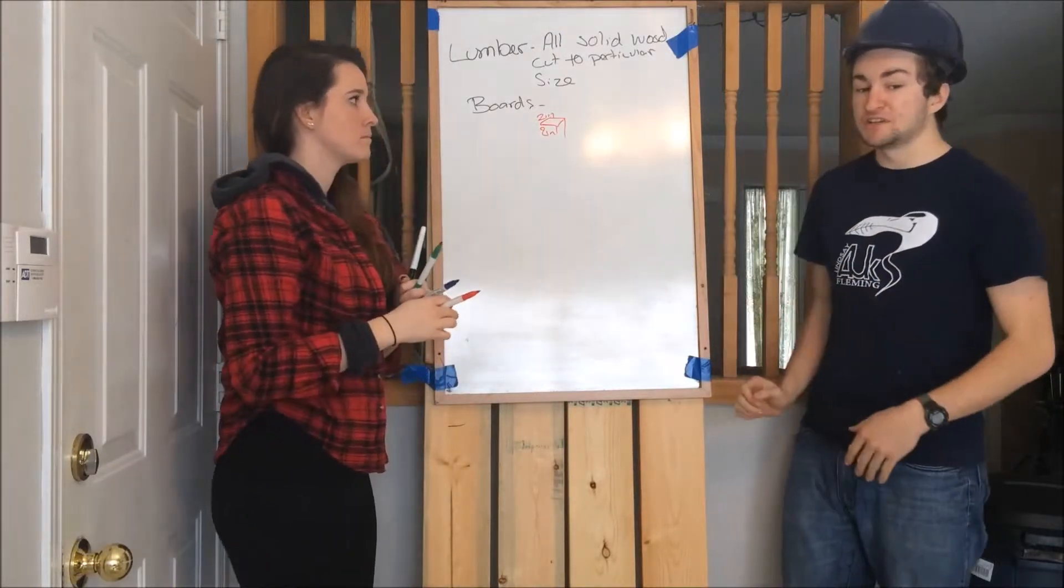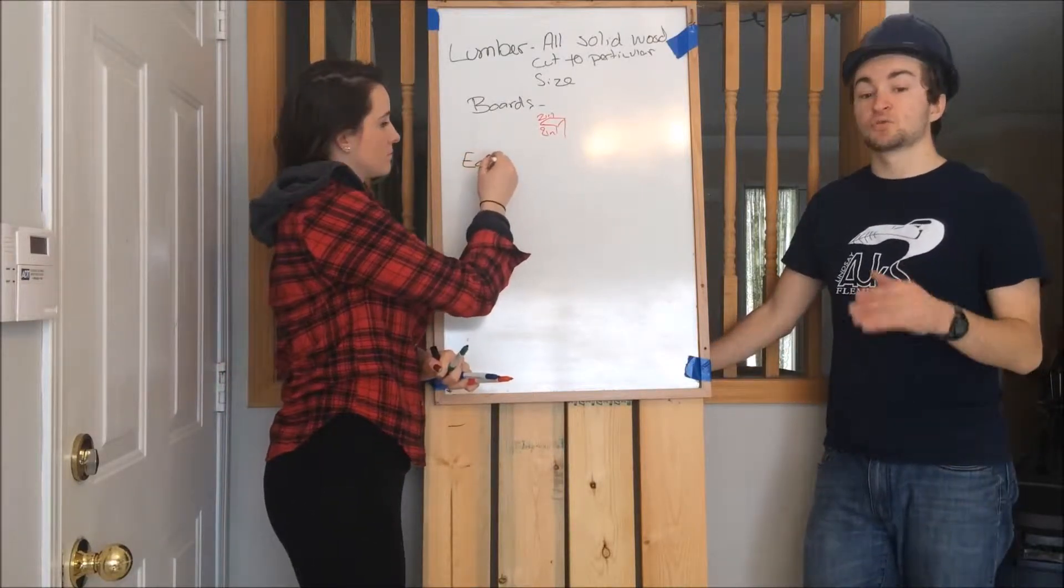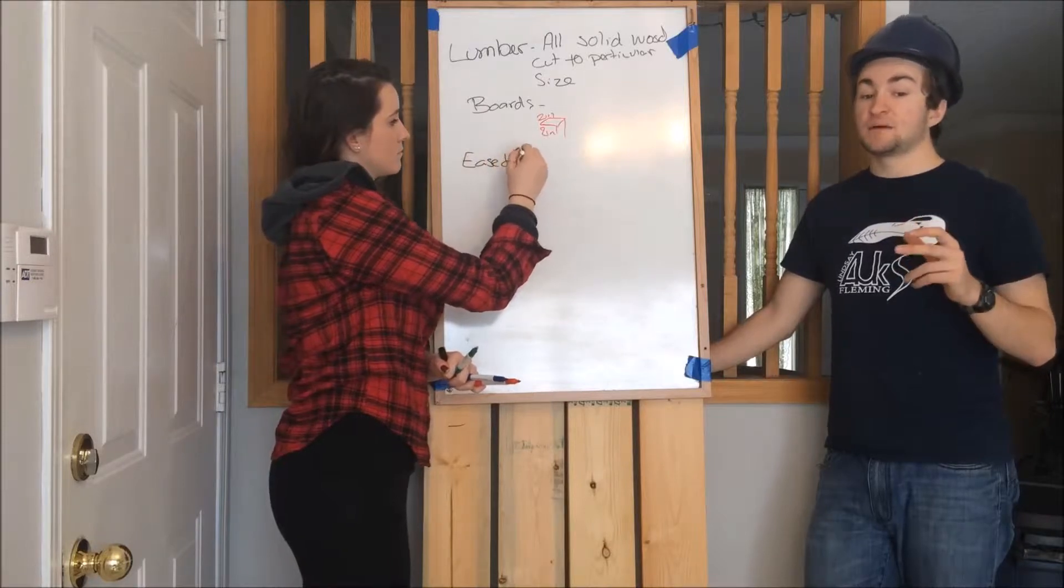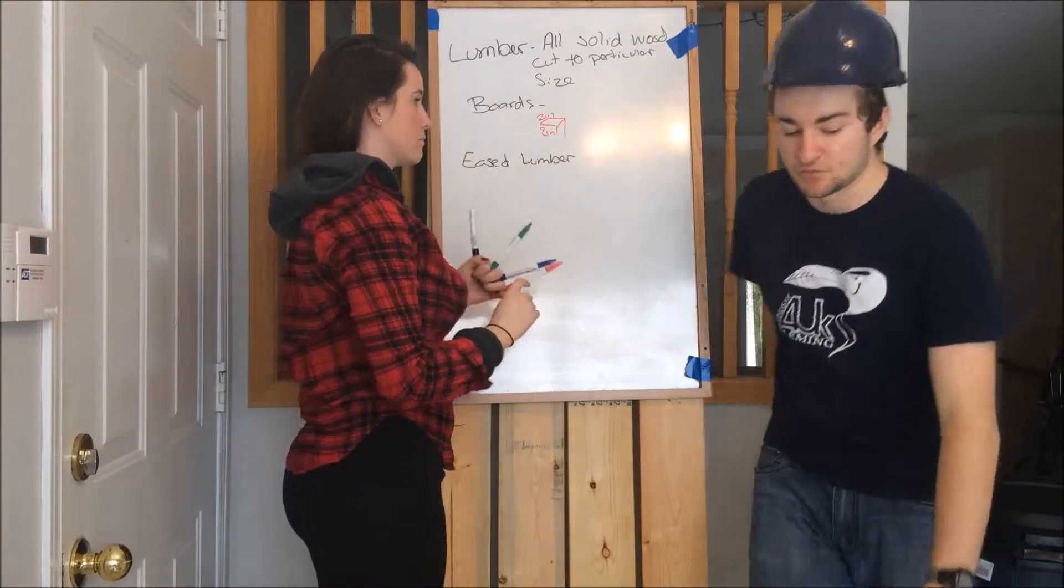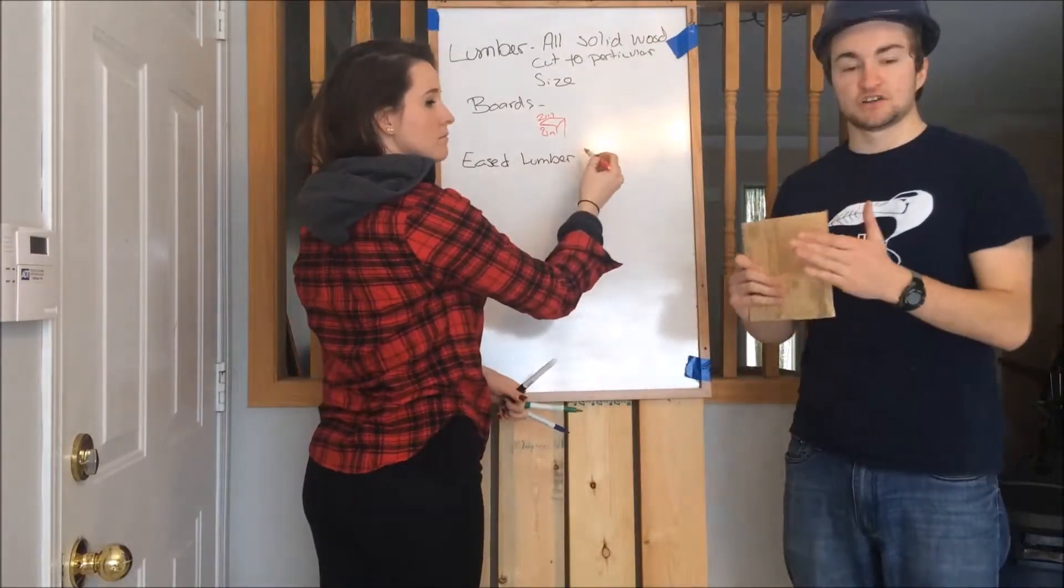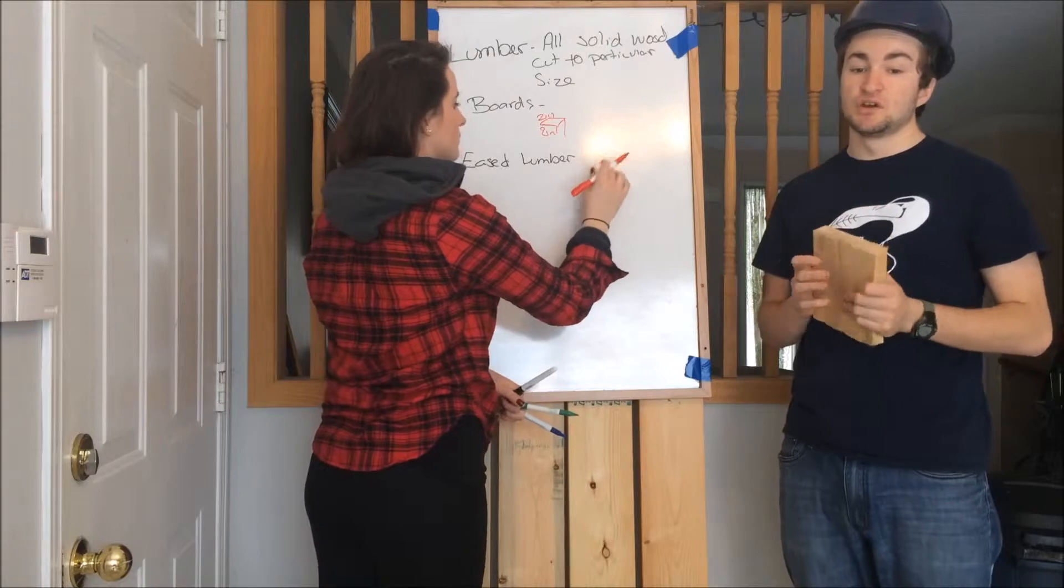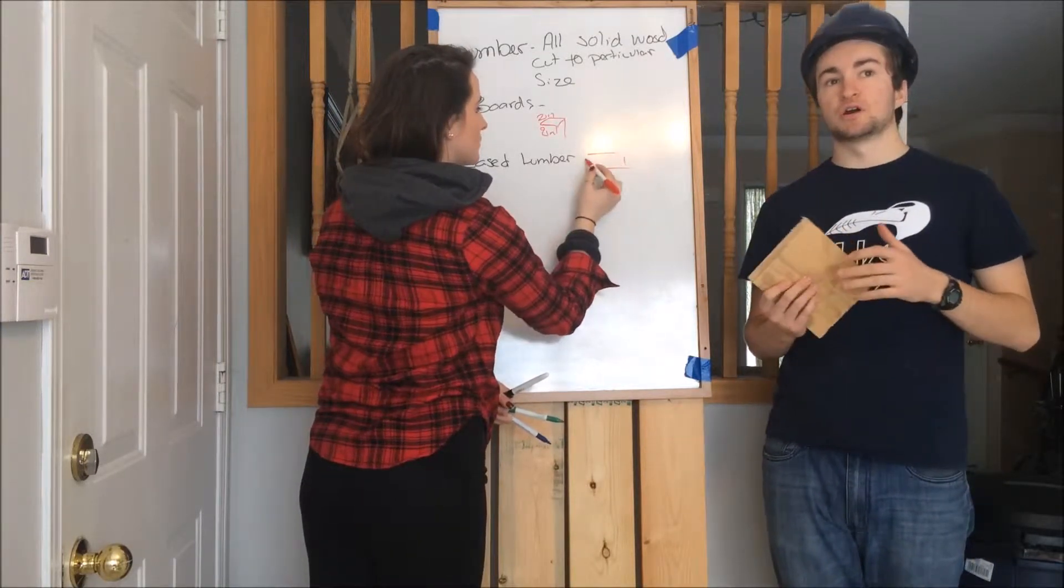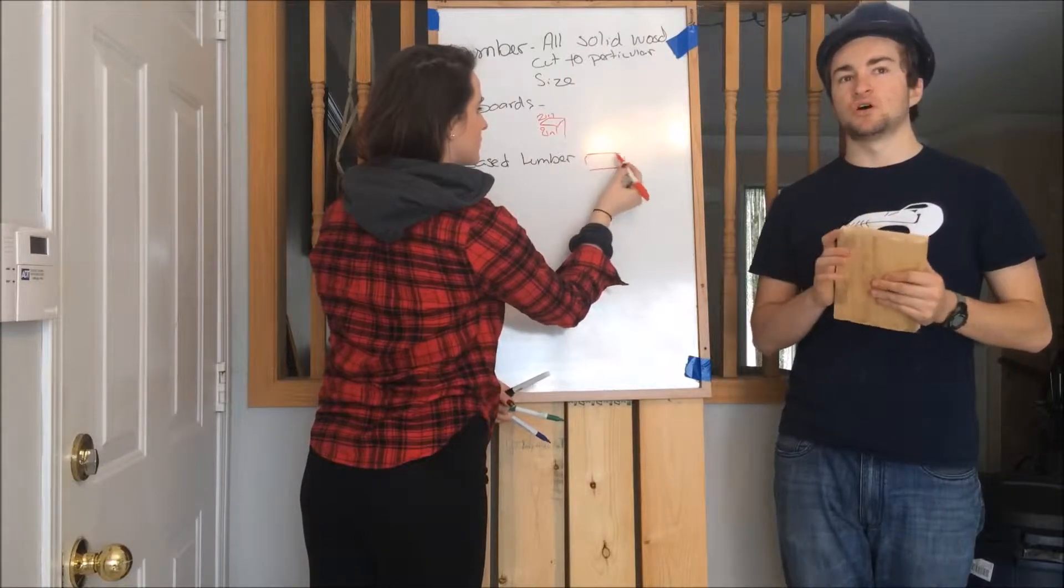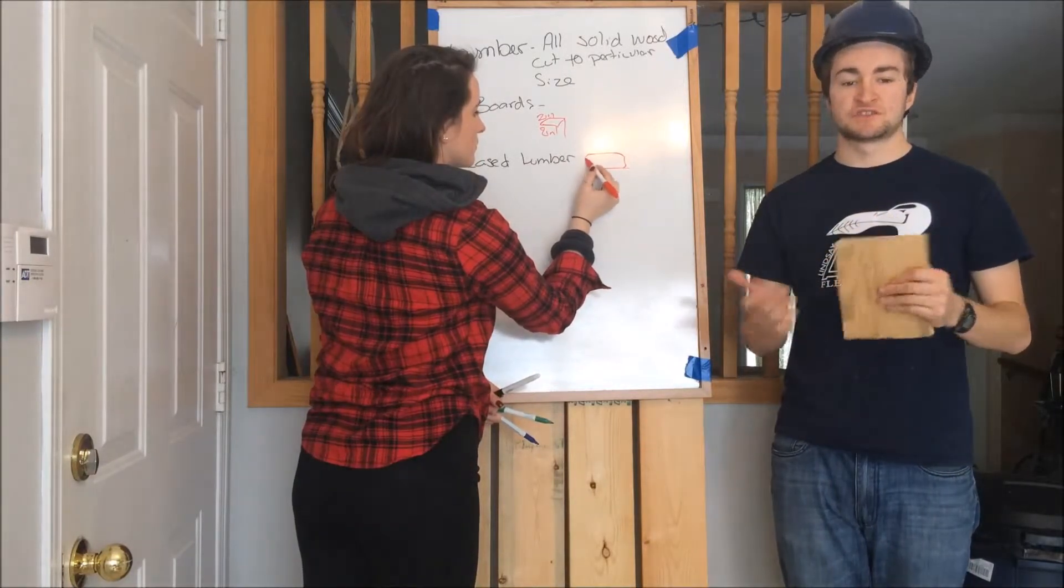We also have what's called eased lumber. These are the part of the edge detail where the corner of the board is rounded. So these boards are not going to be, as an example here, a sharp edge. You're going to have a nice rounded edge and these are going to be used more for stuff like exterior decking or stuff where you don't want a tight seal. You want that rounded for a deck so your water can run through your deck.